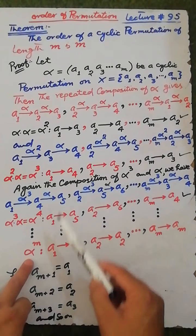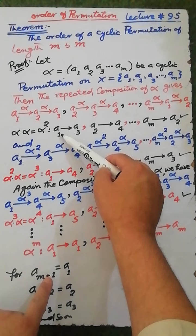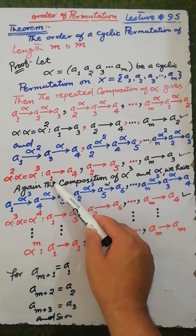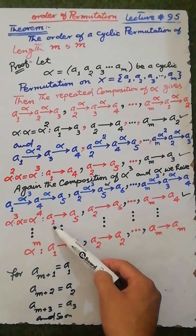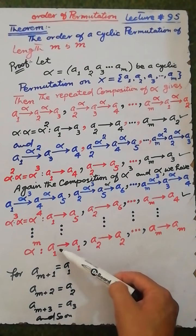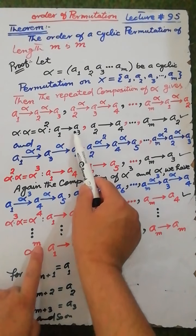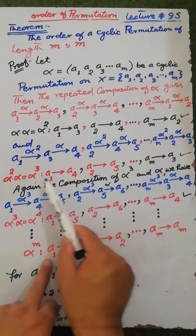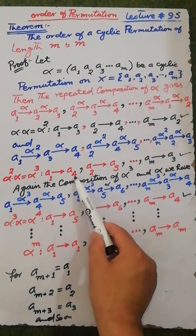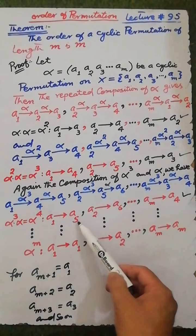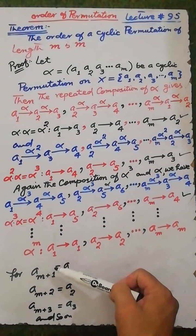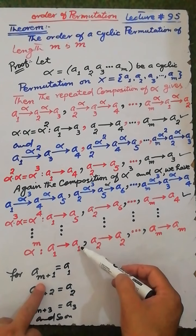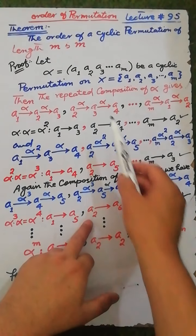In each result there is the initial point a1 of set X. In alpha squared a1 appears, in alpha cubed a1 appears, and in alpha to the fourth a1 also appears. In the last step, a1 maps to a3, then a1 maps to a4, then a1 maps to a5. Adding 1 and m gives a m+1, so a1 maps to a(m+1), and a(m+1) is equal to a1.